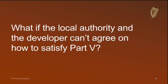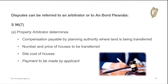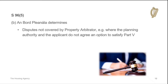What if the local authority and the developer cannot agree on how to satisfy Part 5? If both parties cannot agree, disputes can be referred to a property arbitrator or to An Bord Pleanála. The property arbitrator determines the price payable for land, the number and price of houses to be transferred, the site cost of houses, and — in the case of legacy agreements for financial contributions in lieu of Part 5 made under previous legislation — the payment to be made by the applicant. Alternatively, all disputes not covered by the property arbitrator are determined by An Bord Pleanála — for example, where the planning authority and the applicant do not agree on an option to satisfy Part 5.